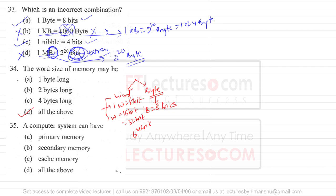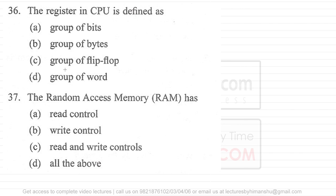Question 35: a computer system can have primary memory, secondary memory, and cache memory — so the answer is option D. Primary memory is the main memory or RAM; secondary memory is the hard disk drive. For question 36, registers in the CPU are defined as a group of flip-flops — not a group of bits, bytes, or words.